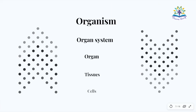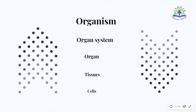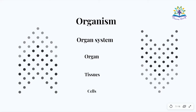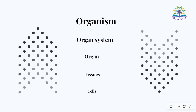That is, from cells, tissues are formed, which combine to form organs. Organs which perform the same function form an organ system, and various organ systems together form an organism. From this we can conclude that cell is the basic structural unit of life.